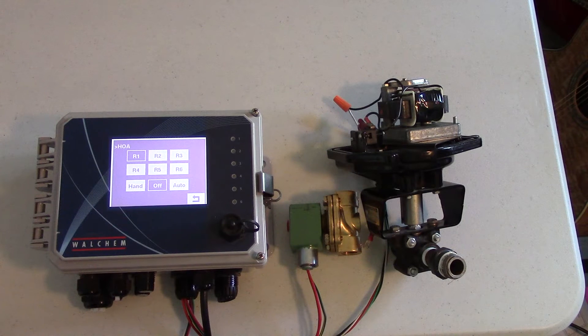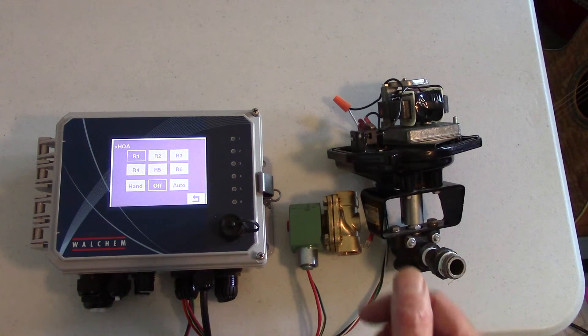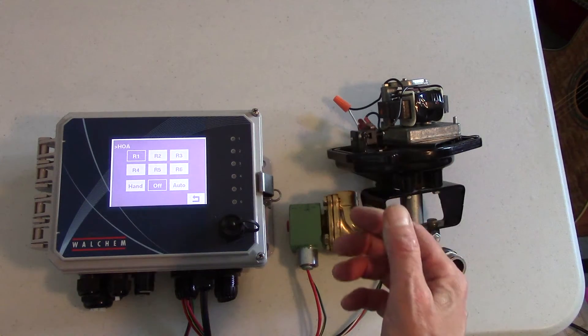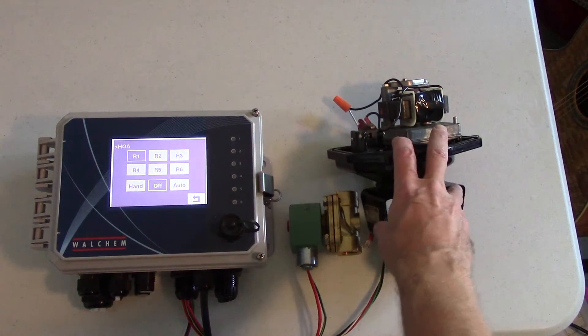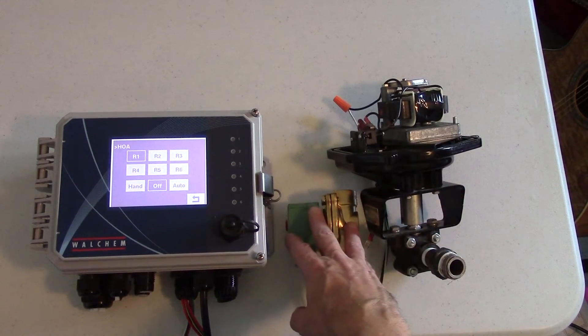This video will show you how to wire a motorized ball valve into the W600 controller. Now I'm kind of starting the video at the end where everything is wired in to show you the difference between the motorized ball valve and a solenoid valve.